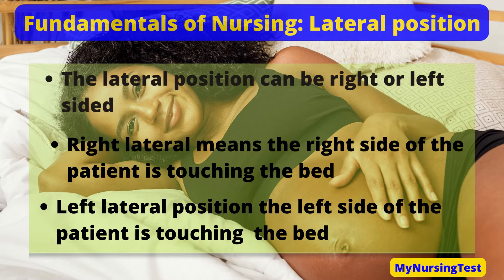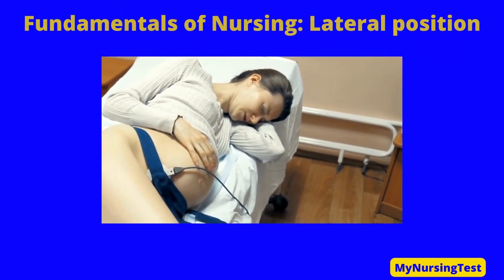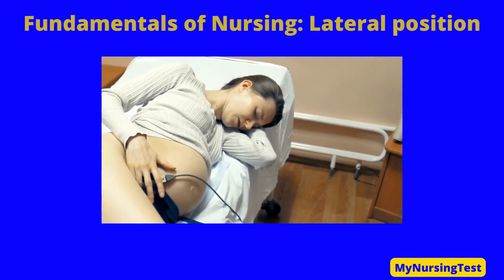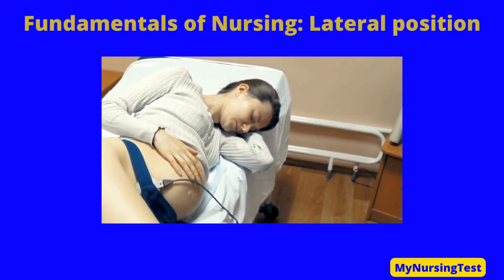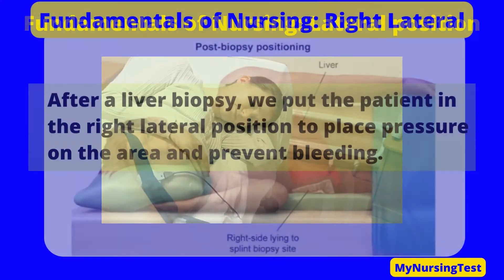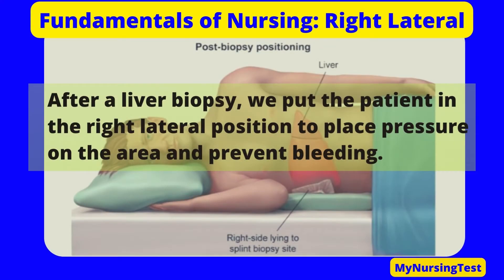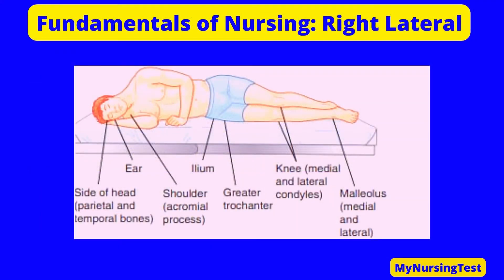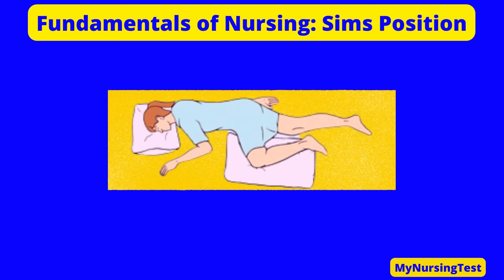The lateral position can be right or left sided. Right lateral means the right side of the patient is touching the bed; in the left lateral position, the patient's left side is touching the bed. The lateral position can be used when turning patients to avoid pressure ulcers and to prevent pregnancy vena cava syndrome. It also increases uterine and renal perfusion during pregnancy. After a liver biopsy, the patient is placed in the right lateral position to apply pressure to the area and prevent bleeding. Pressure areas include the side of the head (parietal and temporal bones), ear, shoulder acromion process, ileum, knee (medial and lateral condyles), and ankle (medial and lateral malleolus).